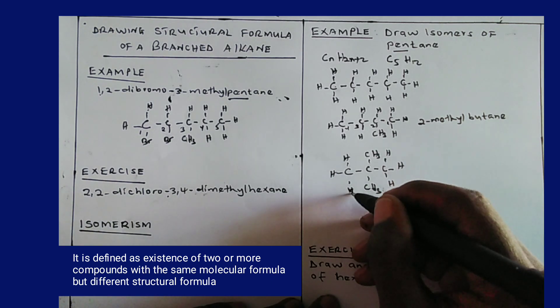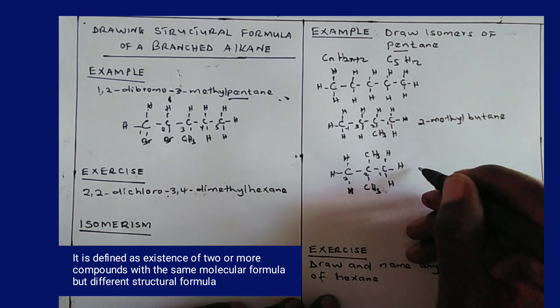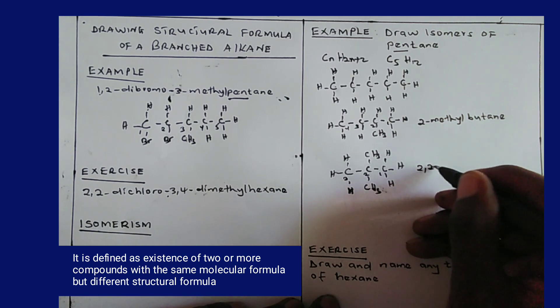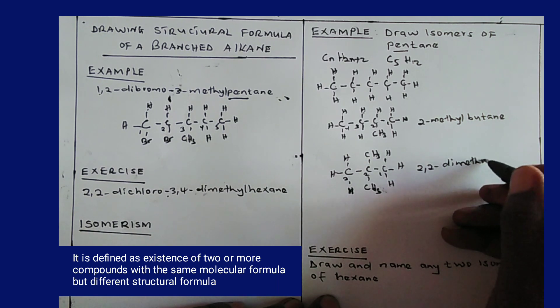So now I'll name this compound as 2,2-dimethyl. The longest chain is three carbon atoms, propane.